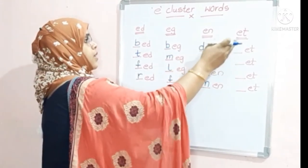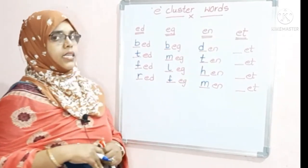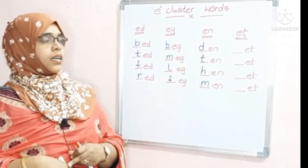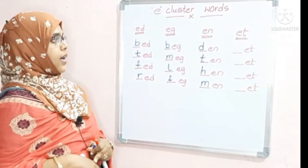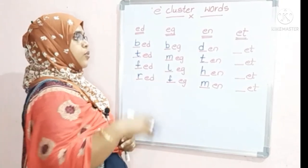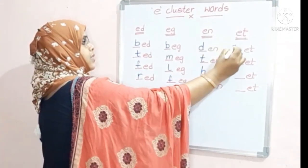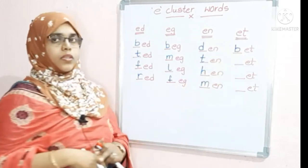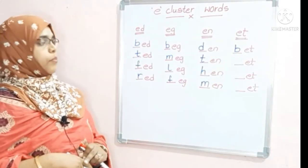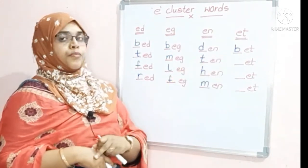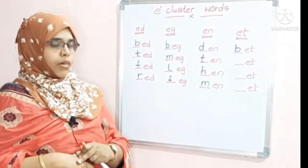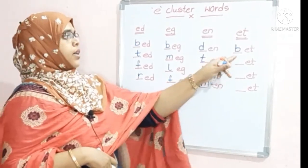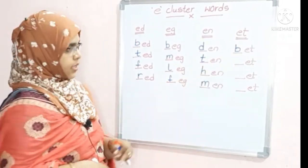The next cluster we have is E-T. To this E-T cluster, if you are adding letter B — the sound of B is B — B + E-T becomes 'bet'.